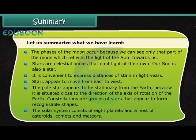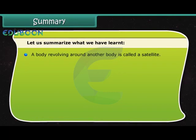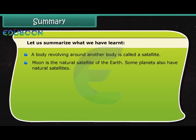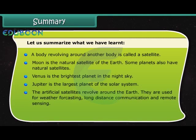The solar system consists of eight planets and a host of asteroids, comets and meteors. A body revolving around another body is called a satellite. Moon is the natural satellite of the earth. Some planets also have natural satellites. Venus is the brightest planet in the night sky. Jupiter is the largest planet of the solar system. The artificial satellites revolve around the earth. They are used for weather forecasting, long distance communication and remote sensing.